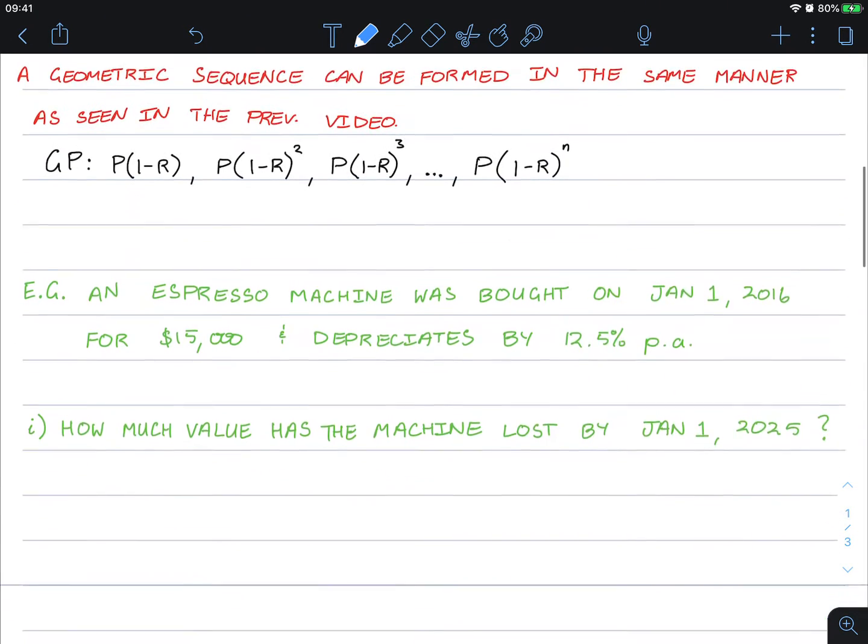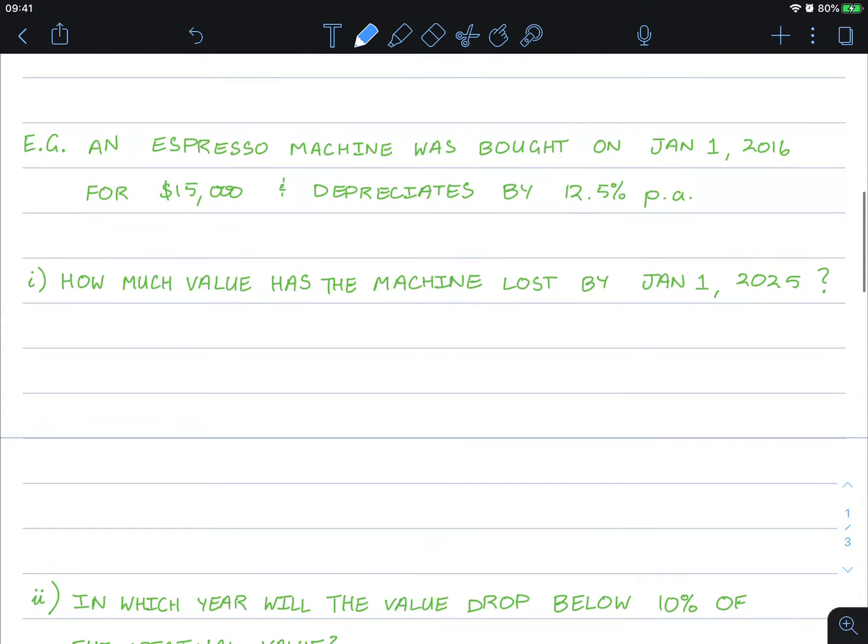So let's do an example here. An espresso machine was bought on January 1st, 2016 for $15,000 and it depreciates by 12.5% per annum. How much has the machine lost by January 1st, 2025?